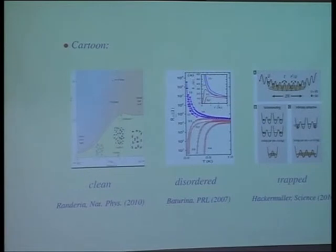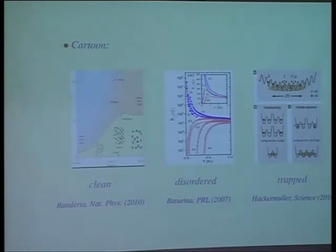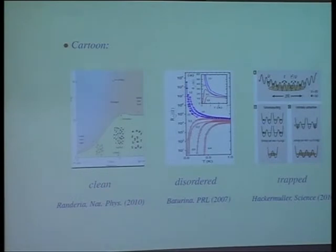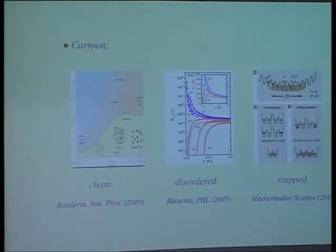This is not a lattice model. This is the continuum problem, where you go from the collective BCS state at weak coupling to this strongly coupled system of pairs at unitarity, onto the weakly interacting bosonic system at strong coupling. And what one takes away from here is there are two scales in the problem. One has to do with pair formation, and the other with the ultimate superfluid transition. So we would want to generate this kind of picture in the context of a lattice model and see what it teaches us.